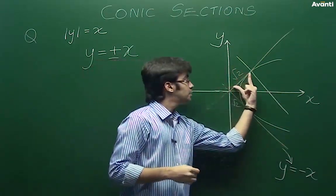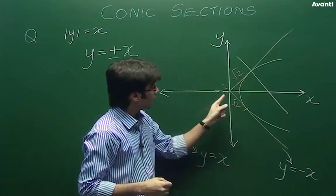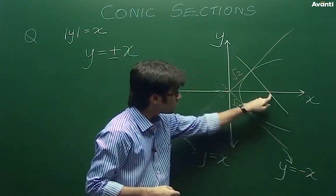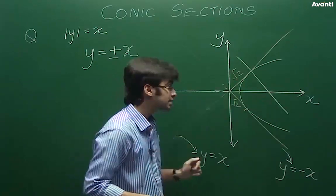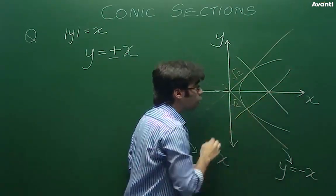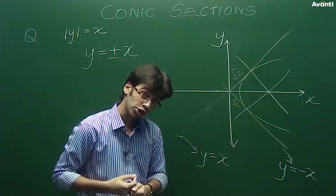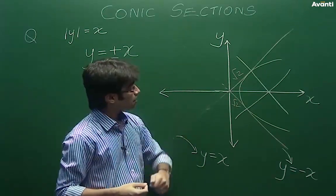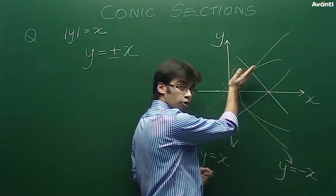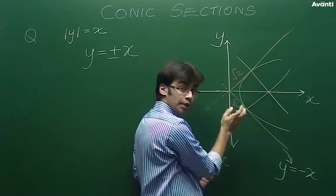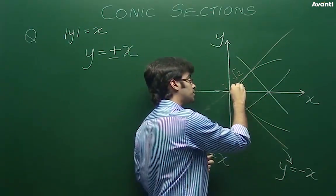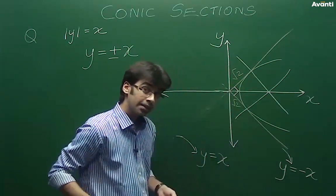अब हमें लग रहा है कि ये length भी equal है, ये length भी equal है। ये point origin पे है, which means यहाँ से जो tangent बनेगा, शायद वो भी इस point से pass करना चाहिए। तो हम symmetry से ऐसे बना लेते हैं और इसको prove करने की कोशिश करेंगे। ये जो line है वो 45 degrees anti-clockwise है क्योंकि y = x है, और ये line 45 degrees clockwise है।